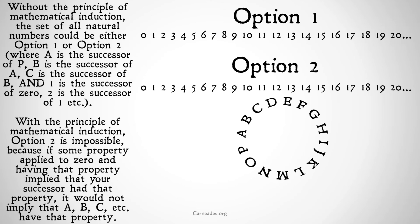In option two, we have both the traditional set of natural numbers that we would think of, but also another set of numbers where A is the successor of P, B is the successor of A, C is the successor of B, etc., and around in a circle. Because only zero is the only number without a previous successor, there are no branches in any way. This is possible with all of our postulates so far. So we need another principle to show that option two is not possible, and option one is the only option.